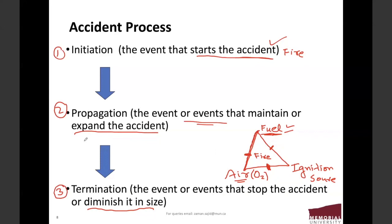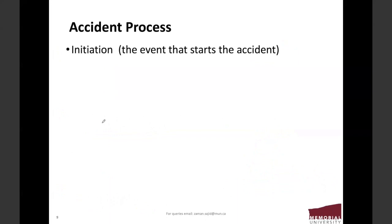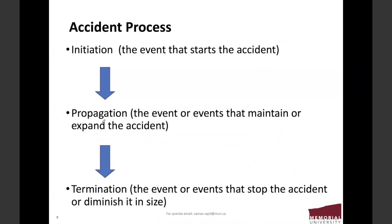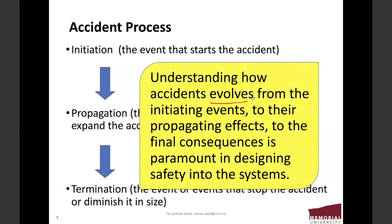When we go into the next lectures, you will see how important these three things are. Understanding how an accident evolves — from the initiating events to the propagating effects to the final consequences — is paramount in designing safety into a system. You cannot introduce safety into your system unless you understand how initiation, propagation, and termination evolve.